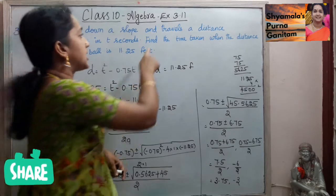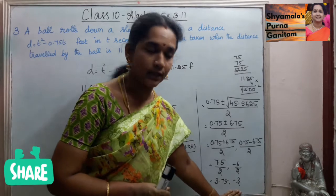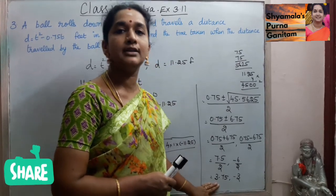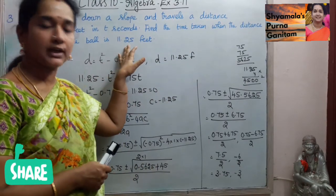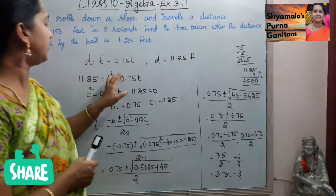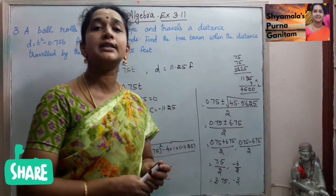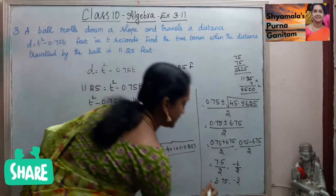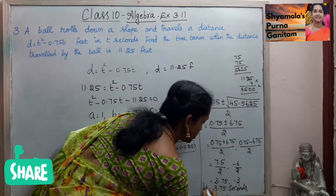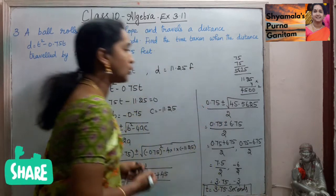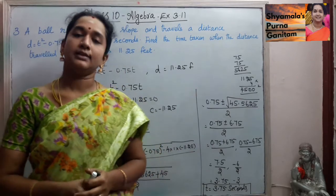What are we asked to find? We are asked to find the time taken. The time taken cannot be a negative value, so the answer is 3.75. The time taken when the distance travelled by the ball is 11.25 feet is 3.75 seconds. So t equals 3.75 seconds. We used the quadratic formula to find this. Thank you.